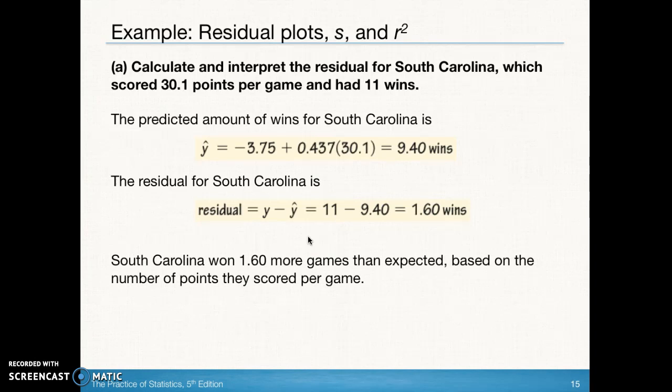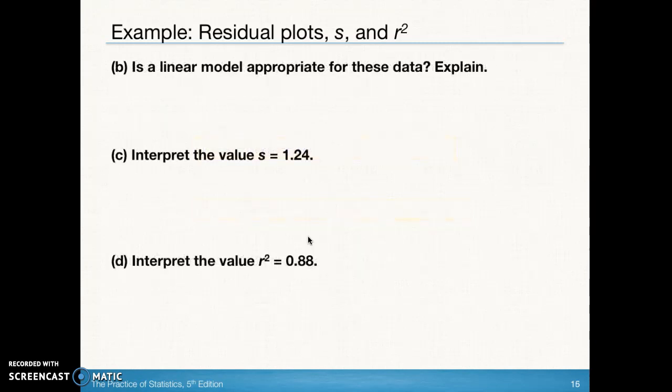If the residual is positive, we ended up with a predicted value that was lower than the observed value. So South Carolina won 1.6 more games than expected based on the number of points, 30.1, that they scored per game. Let's take a look at part b.